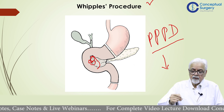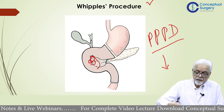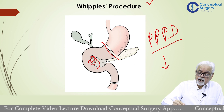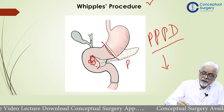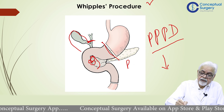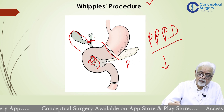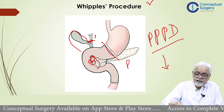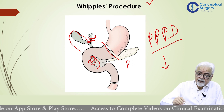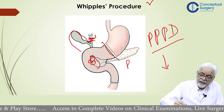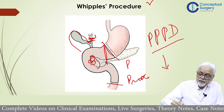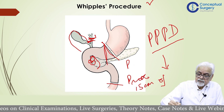In Whipple's procedure, we perform a partial gastrectomy, removal of the bile duct and gallbladder. We generally remove the bile duct up to the level, leaving behind a stump of about one to two centimeters — that is the level at which the bile duct is divided. Then we remove the head of the pancreas and the proximal 15 centimeters of jejunum.